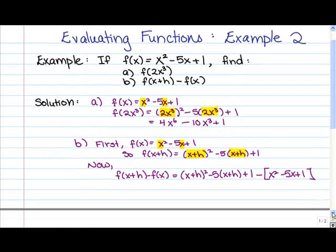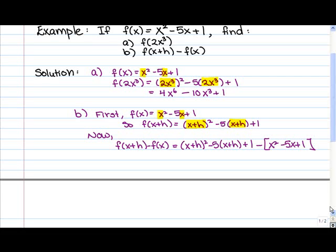Technically, we're done, but we should go ahead and simplify as much as we can, because several of these terms, in fact, cancel. So first of all, (x+h)² is just (x+h)(x+h). So we'll actually multiply that out in the next step.